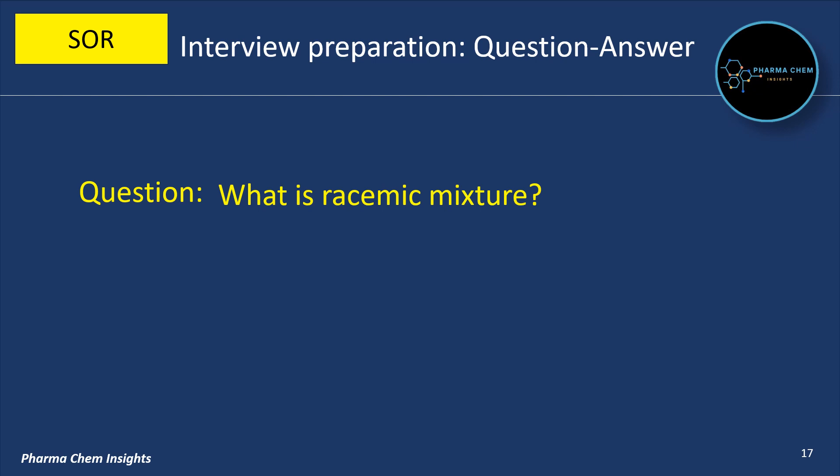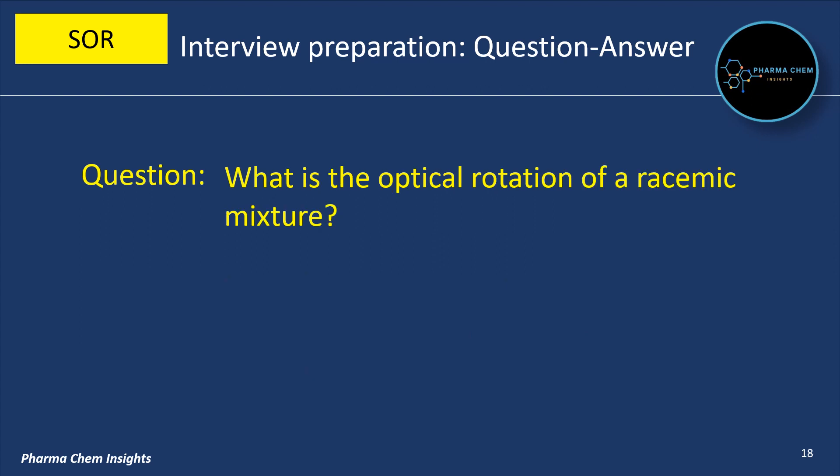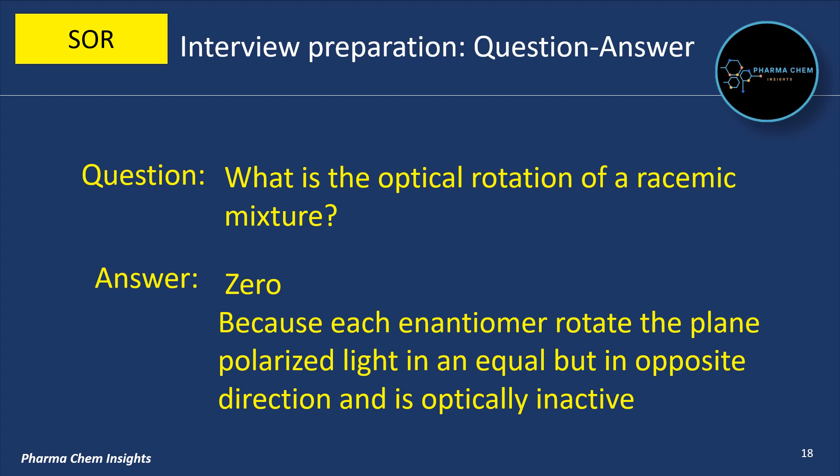What is a racemic mixture? A racemic mixture is one that has equal amounts of left and right-handed enantiomers of a chiral molecule. The optical rotation of a racemic mixture is zero because each enantiomer rotates the plane polarized light in an equal but opposite direction, making it optically inactive.